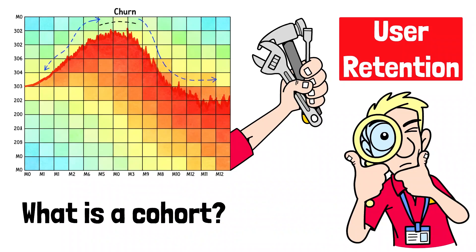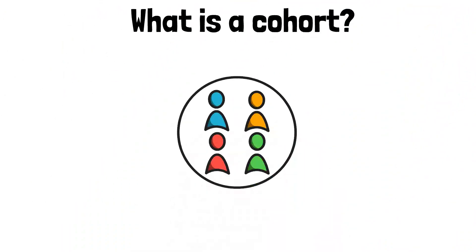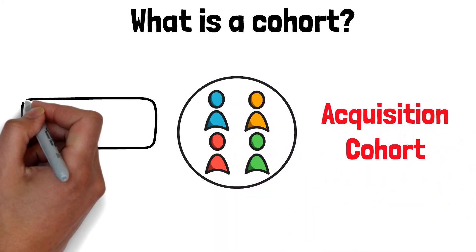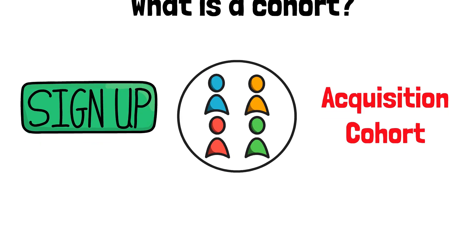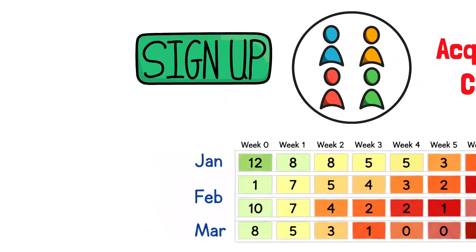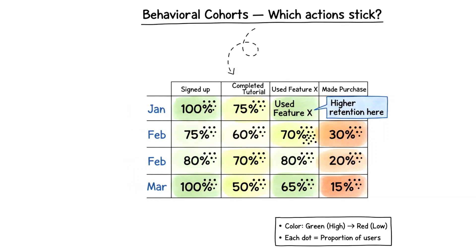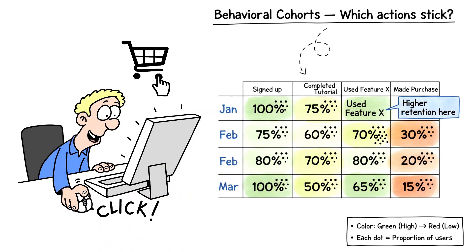So what is a cohort? A cohort is simply a group of users who share a common characteristic. The most common type is an acquisition cohort, which groups users by when they signed up. For example, everyone who joined in January is one cohort. There are also behavioral cohorts, which group users by actions they took, like making a first purchase.